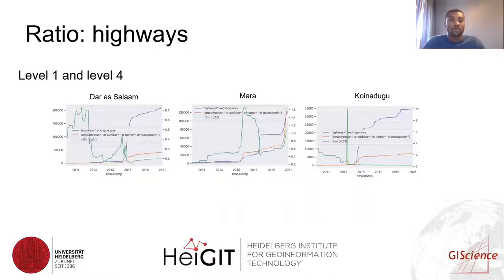We also included a ratio analysis — using highways as an example — to show the differences. In this case we showed level one and level four, and you can see that the ratio between the two is quite large.